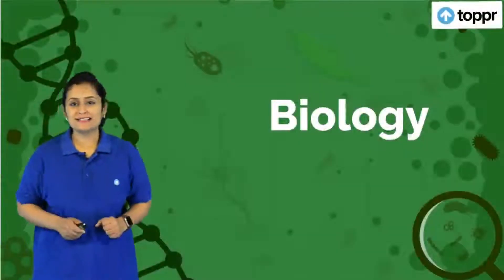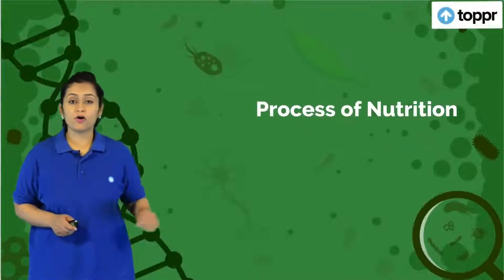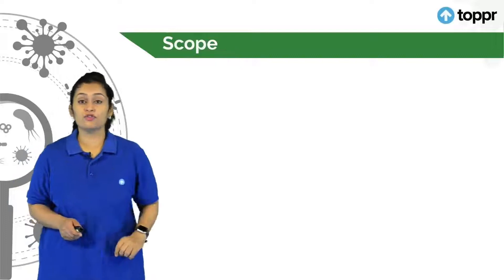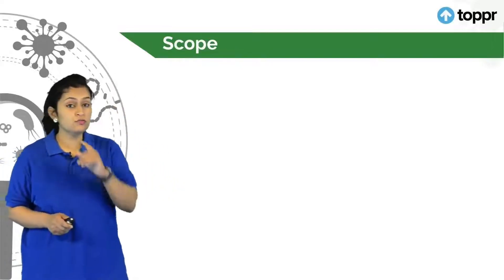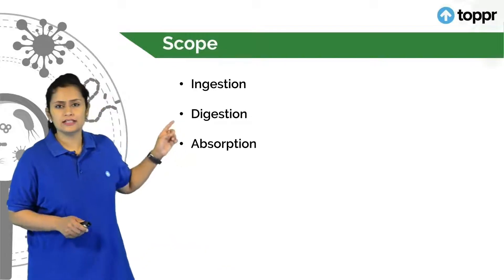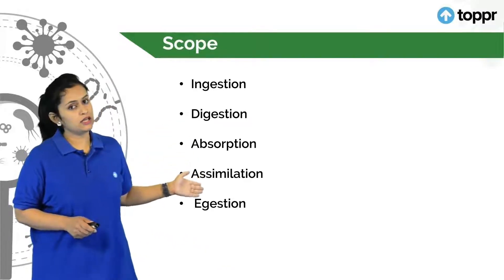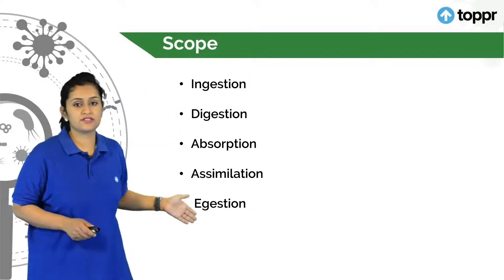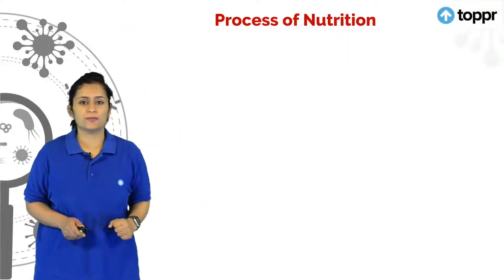Welcome students to yet another session of biology where we are going to talk about the process of nutrition. In this video we are going to focus on different processes involved in human nutrition, namely ingestion, digestion, absorption, assimilation and ejection. But before going to all these five steps, let us just understand the process of nutrition.